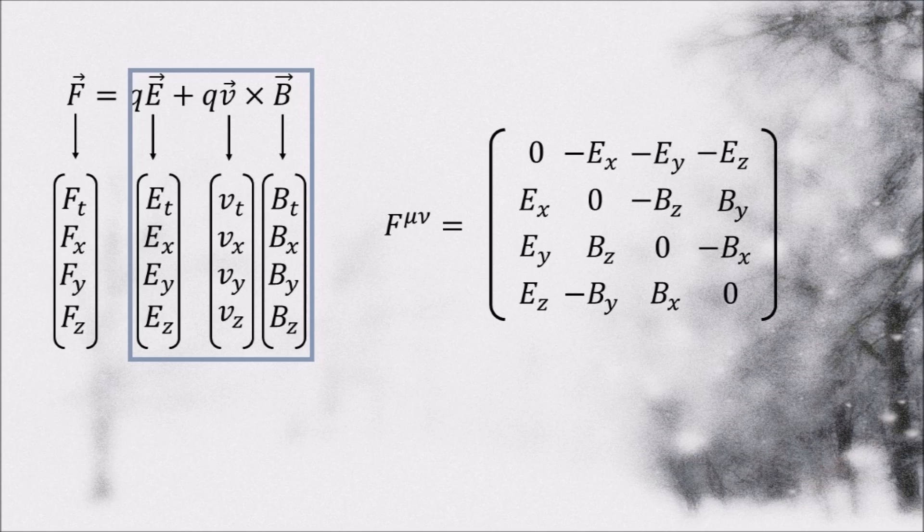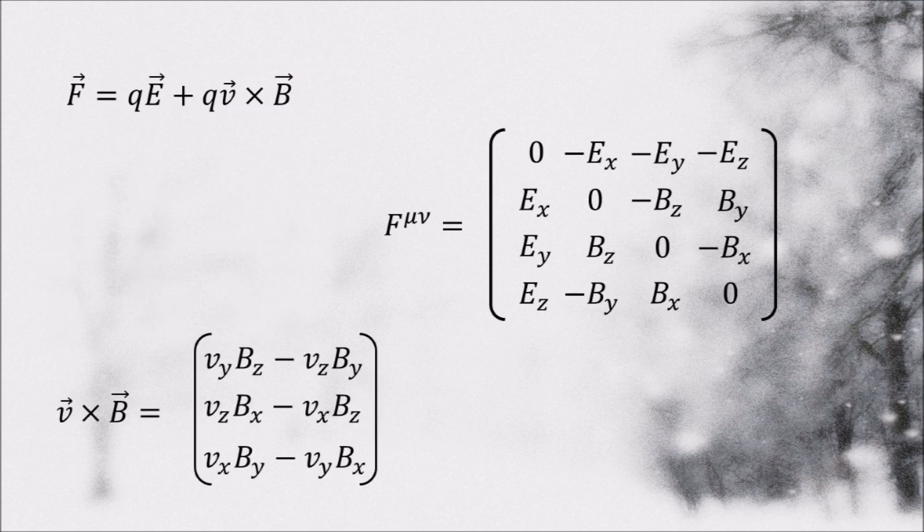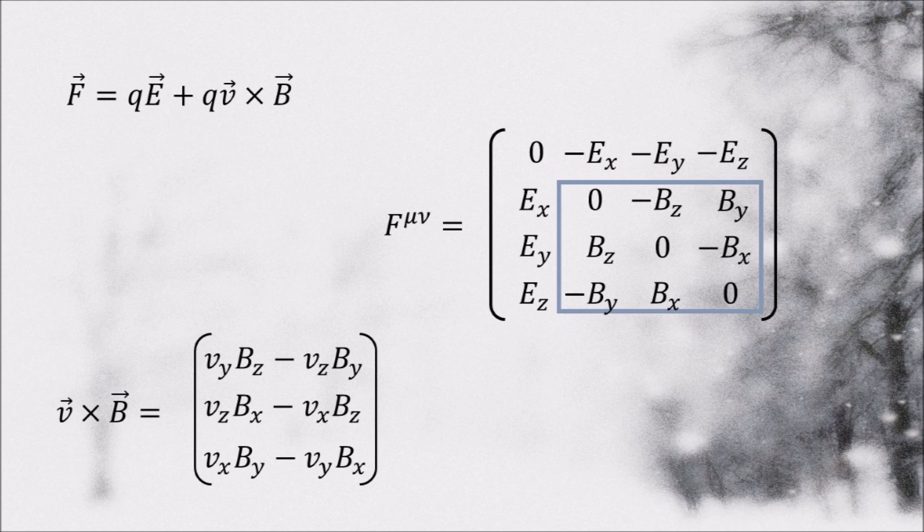We can get a clue as to what to do from the second term. First, let us write the cross product explicitly. Notice that if we focus only on this portion of the electromagnetic tensor and multiply it by the velocity three vector, we get the cross product with a minus sign.